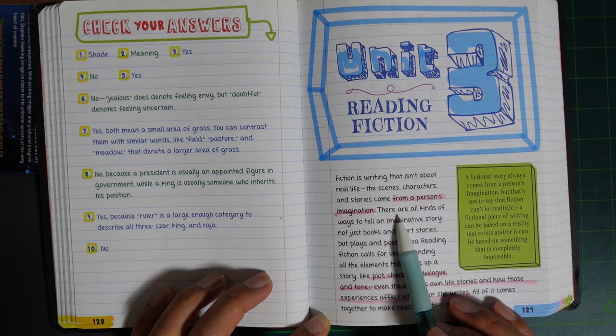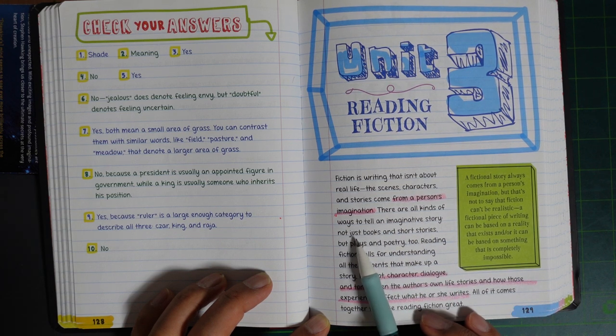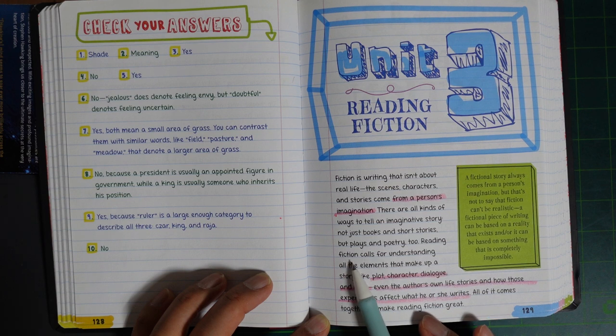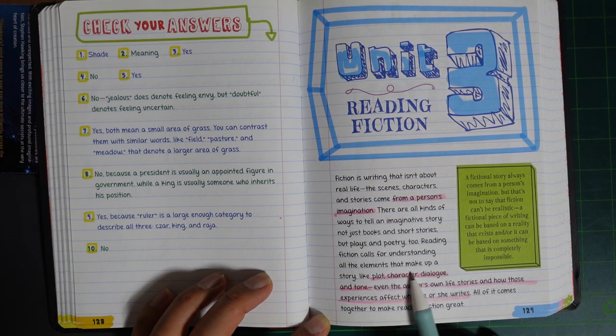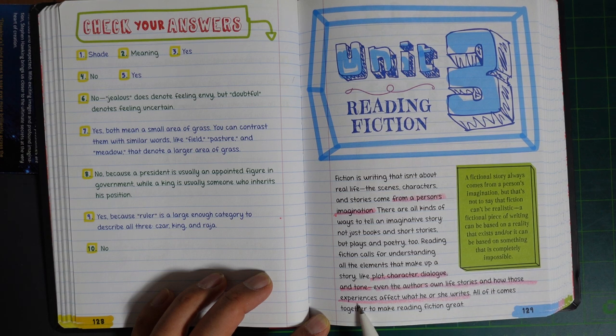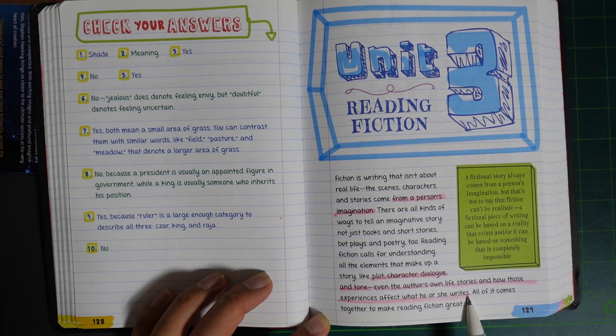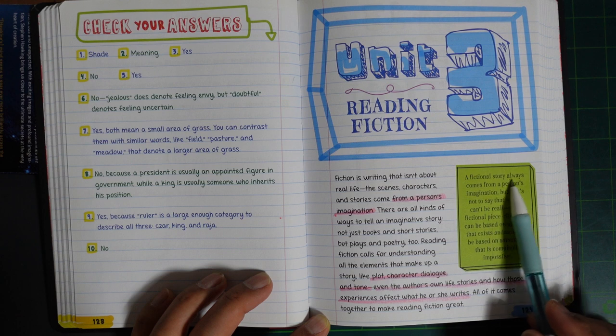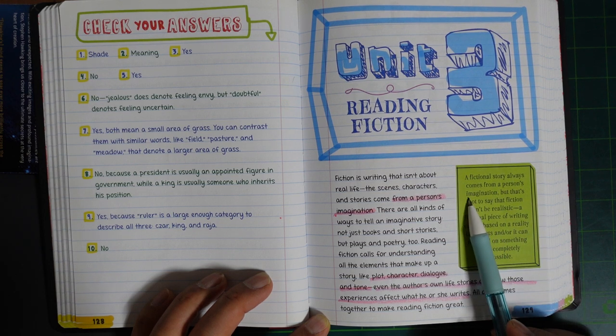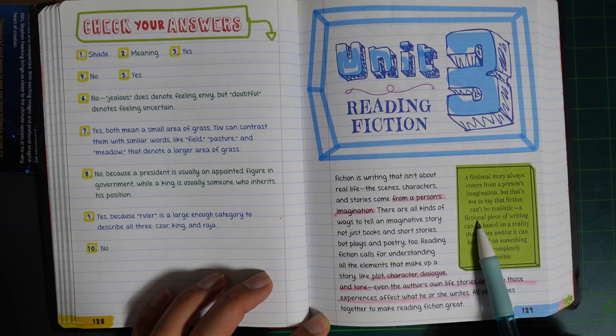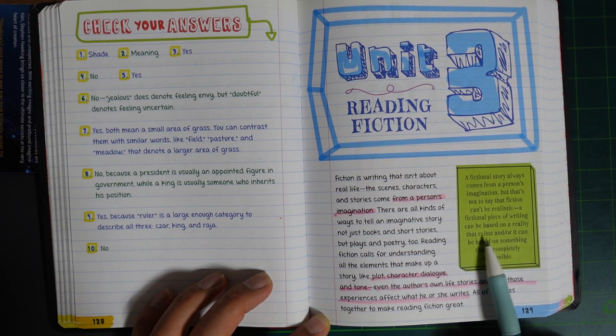There are all kinds of ways to tell an imaginative story, not just books and short stories, but plays and poetry too. Reading fiction calls for understanding all elements that make up a story, like plot, character, dialogue, and tone. Even the author's own life stories and how those experiences affect what he or she writes. A fictional story always comes from a person's imagination, but that's not to say that fiction can't be realistic.